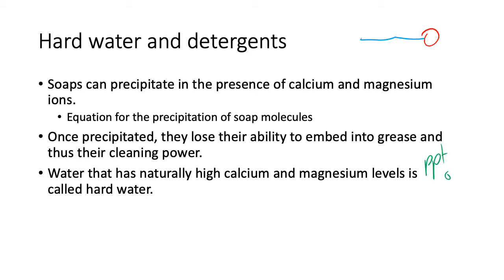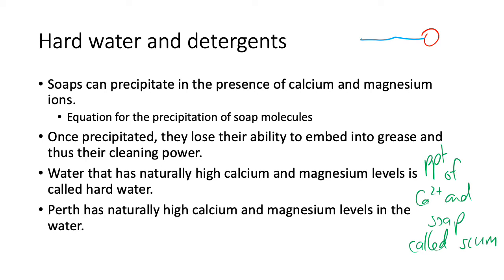That precipitate of calcium ions and soap is called scum. Lucky for you, Perth has naturally high calcium and magnesium levels in the water.